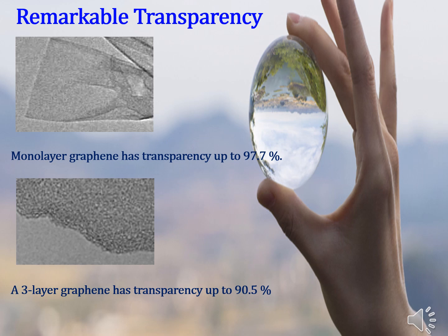Graphene displays remarkable optical properties, including simple light transparency in the visible region. Many researchers have demonstrated that monolayer graphene has transparency up to 97.7 percent, reducing to 90.5 percent for tri-layer graphene. This characteristic makes graphene an alternative material for transparent conducting oxides, which mainly raise the cost of solar panels. Therefore, graphene is a key solution for photovoltaic technology in many ways.